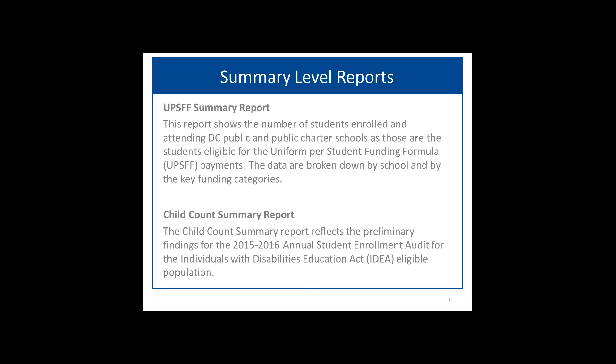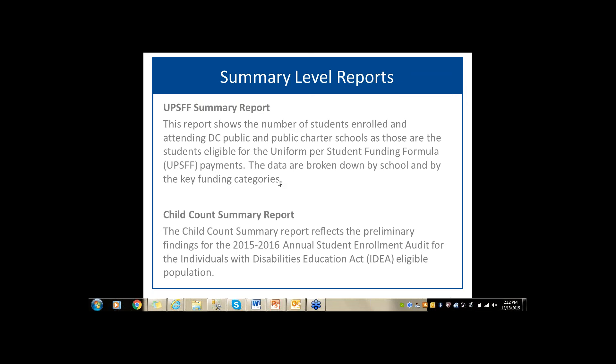The summary level reports in SLED show the LEA summary view. There's the UPSFF summary report, which shows the number of students enrolled and attending DC public and public charter schools — those eligible for the uniform per student funding formula payments — broken down by school and key funding categories. This table reflects the preliminary results from the Enrollment Audit. There's also the child count summary report reflecting findings from the 2015-16 Annual Student Enrollment Audit for the Individuals with Disabilities Education Act eligible population. We're not discussing that in depth today, but it is subject to appeal.